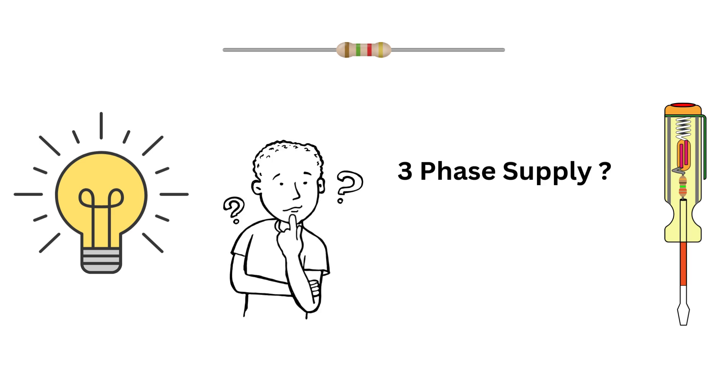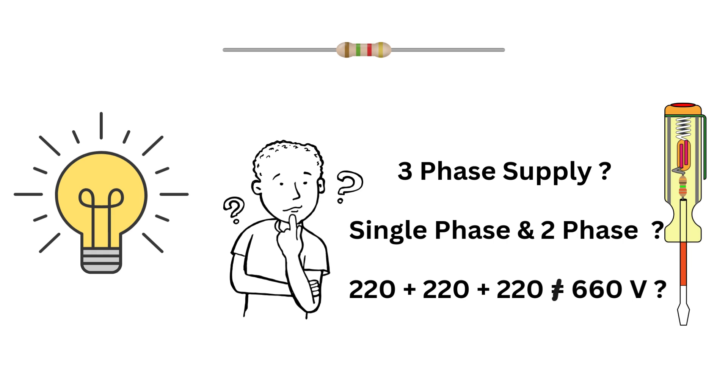What is a three phase supply? How does it differ from single phase or two phase? And why isn't three phase simply 220 plus 220 plus 220 equals 660 volts? Let's break it all down.